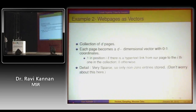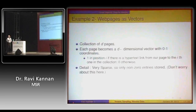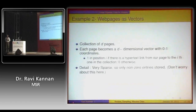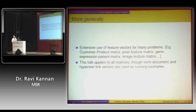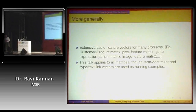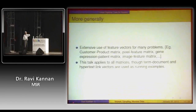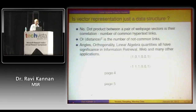A second example: you can represent web pages as vectors. You have a collection of d pages, and each page you represent as a 0-1 vector, telling you whether it points to a particular page or not. An average web page points to about seven other web pages, whereas there are at least 10^10 web pages — so you have a 10^10-dimensional vector, almost all of it zero. By now, many things are represented as feature vectors. This is an important way of representing data, and we'll try to see why it's useful.